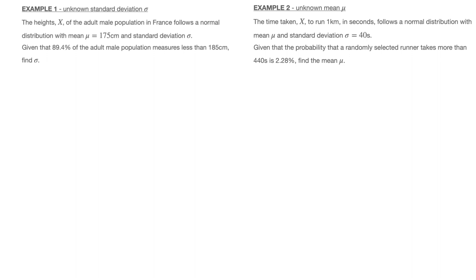In example one, we're told the heights X of the adult male population in France follows a normal distribution with mean mu which equals 175 centimeters and standard deviation sigma. Given that 89.4% of the adult male population measures less than 185 centimeters, find sigma, the standard deviation.